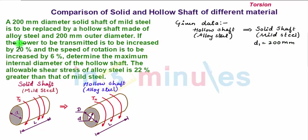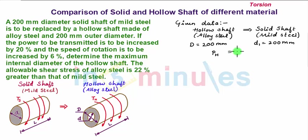The hollow shaft which replaces the solid shaft has outer diameter D = 200 mm. The power transmitted by the hollow shaft will be 20% more than that transmitted by the solid shaft, so P_H = 1.2 × P_S, where suffix H denotes hollow shaft and S denotes solid shaft.